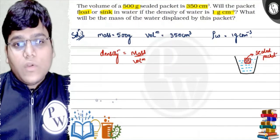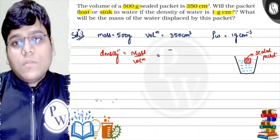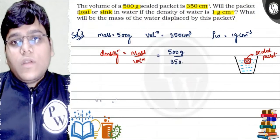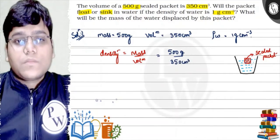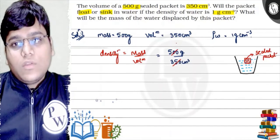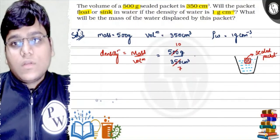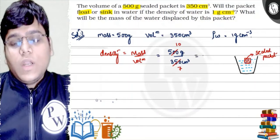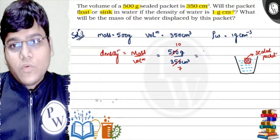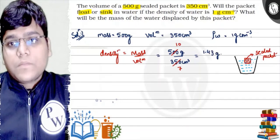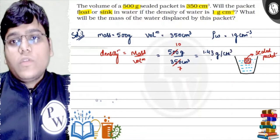So, let's put the value here. Mass is 500 grams. Volume is 350 cm³. Is it cancelled? 50 is cancelled. So, it will be 10 and 7. So, how much is it? 10 upon 7. 10 upon 7 will be 1.43. 1.43 gram per cm³. So, this is the density.